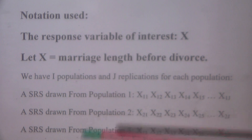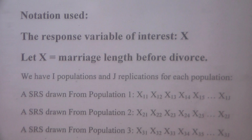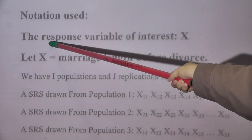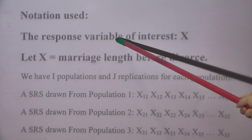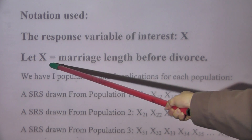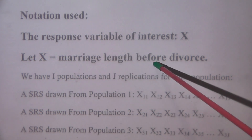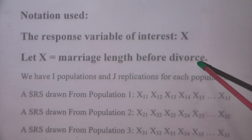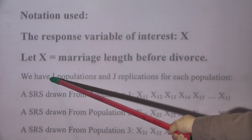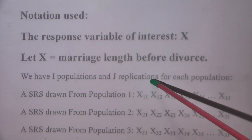Next, let's introduce the notation used in our one-way ANOVA model. The response variable of interest is x, and let x be the marriage length before divorce. When I have i populations and j replications.